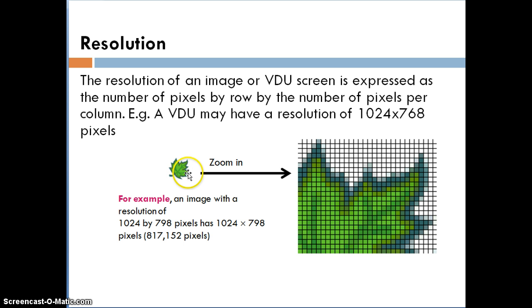Looking at this image of a leaf here, and if we look at that zoomed in, we can see each individual pixel. Again, each pixel is given a single color value. If we think of an image, an image might have a resolution of 1024 pixels by 798 pixels. To find out the total number of pixels, we would multiply the two together. So, 1024 times 798 means that an image of this resolution would have 817,152 pixels.